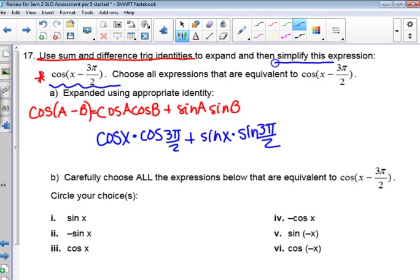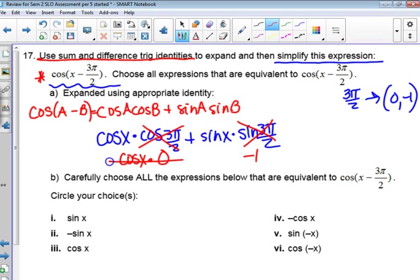Then simplify this expression. Well, can you go to three pi over two on your unit circle? What's the ordered pair? Zero negative one. Did I get it right? Okay. Okay. So at three pi over two, the cosine is replaced with what? Zero. And the sine is replaced with? So I have the cosine of X times zero, which sounds a lot like zero, plus the sine of X times negative one, which would simplify to negative sine X.